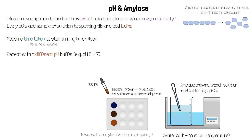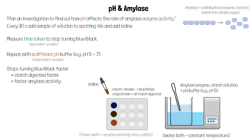We repeat the same process but with a new beaker of amylase and starch using a different pH buffer, such as pH 6 or pH 7. pH is our independent variable. The shorter the time taken to stop turning blue-black, the faster the starch is being digested, so the faster the amylase is working.